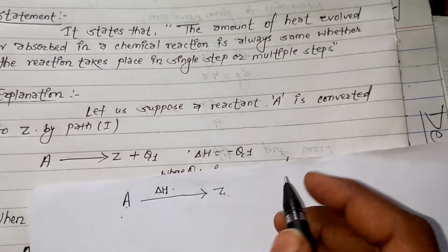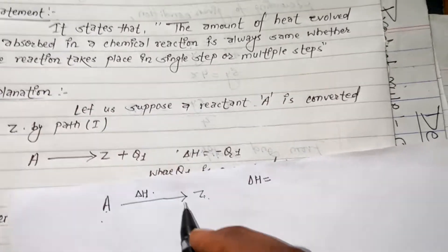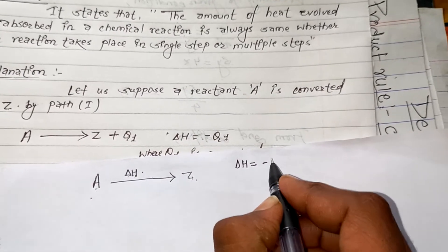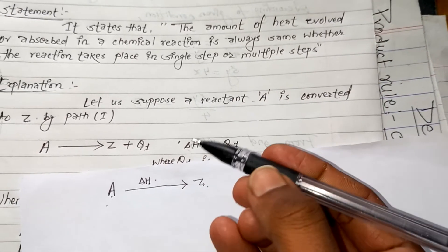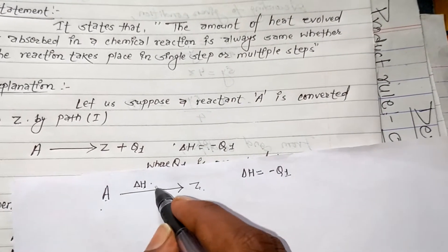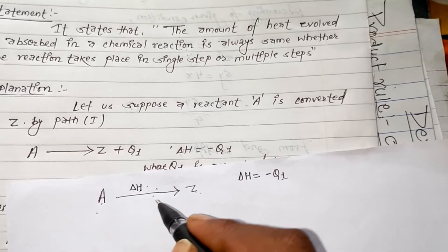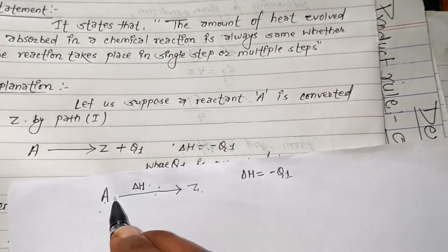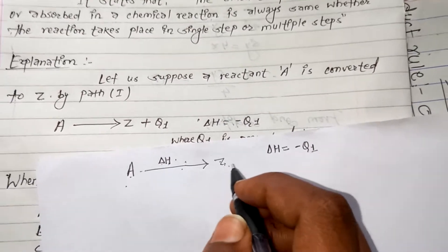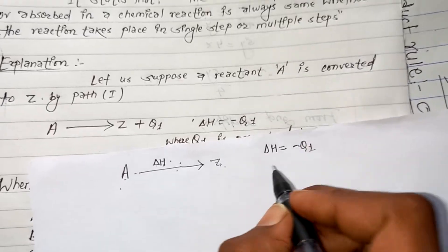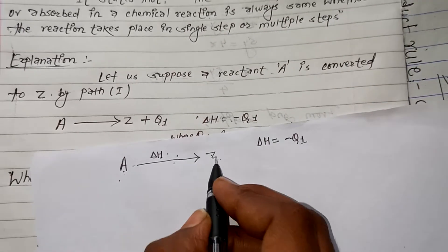This enthalpy change is represented as delta H, or it can be expressed as Q — the amount of heat evolved or absorbed in the reaction.